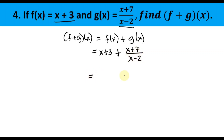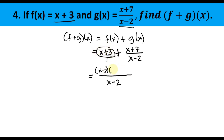We need to find the LCD. Since the only denominator is x − 2, that is our LCD. Note that x + 3 is understood to have a denominator of 1. To get the same denominator, we multiply (x + 3) by (x − 2): (x − 2) ÷ 1 = x − 2, times the numerator x + 3. The second fraction: (x − 2) ÷ (x − 2) = 1, times (x + 7) = x + 7. All over the denominator x − 2.